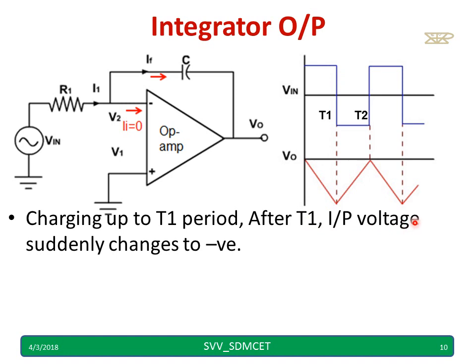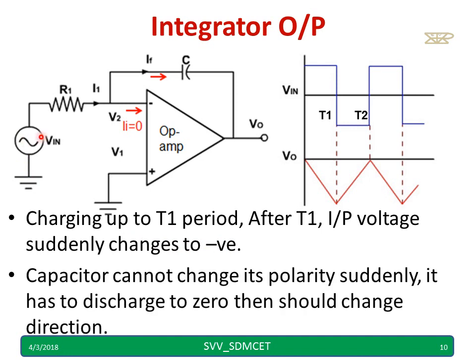After T1 input voltage suddenly changes to negative. It was positive earlier. Now it becomes suddenly negative. Because this changes to negative, capacitor cannot change its polarity suddenly because it is already charged negative up to certain voltage.